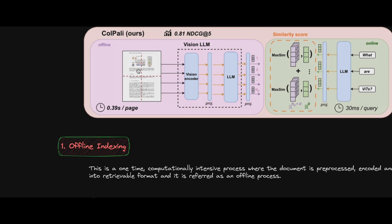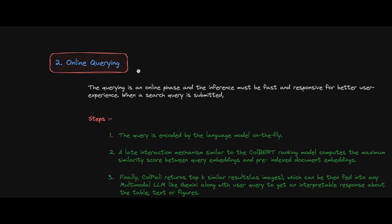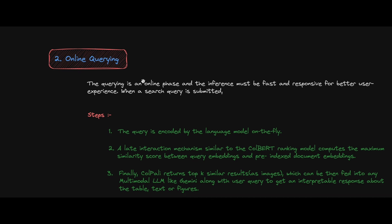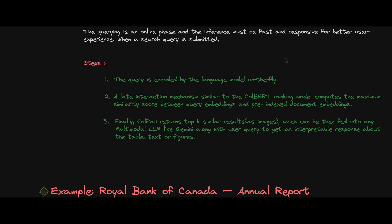That covers the offline process. Now for the online process. When you submit a query, the online phase must be fast and responsive. The query is encoded using a language model on the fly, and then the late interaction mechanism works again — separately but effectively — between your query and the pre-indexed document.